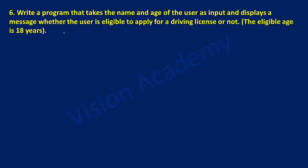Hello and welcome to Vision Academy. In this video we are going to study lab program 6: write a program that takes a name and age of the user as input and displays a message whether the user is eligible to apply for a driving license or not. The eligible age is 18 years.